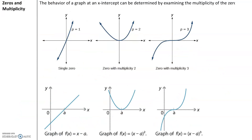Now let's talk about the behavior of a graph at an x-intercept, which determines the multiplicity at that point. If the graph simply crosses the x-axis, there is a multiplicity of 1 — it's a single zero. When the graph crosses at point A, the factor is just x minus A, and the degree is 1. Multiplicity means what is the degree, so this has a degree of 1.